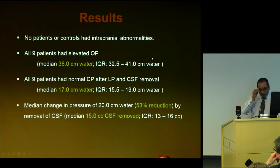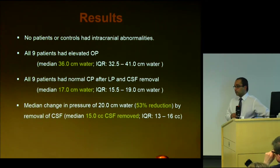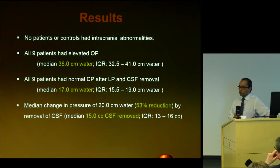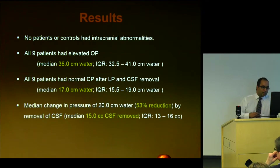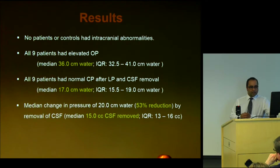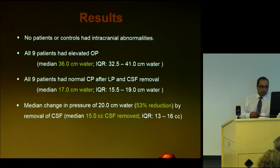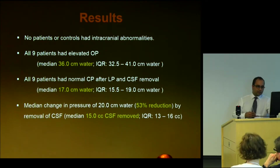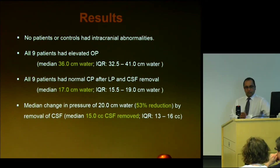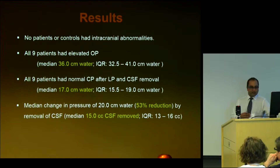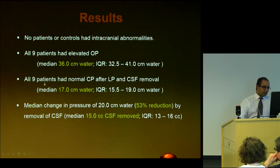Our results: each of these patients did wind up having a diagnosis of idiopathic intracranial hypertension — no intracranial abnormalities, no mass or hydrocephalus. All patients had elevated intracranial pressure; the median was 36 centimeters water. We lowered that to 17 centimeters water, a reduction of over 50%, removing on average about 15 cc's of CSF. That closing pressure of around 17 is within the normal range.